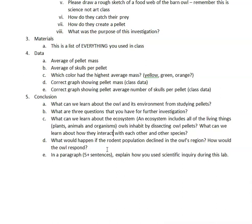What would happen if the rodent population declined in the owls' region? Most of our owl pellets had rodents, but let's say something happened to them — a disease, or a new predator came in and started eating them faster than the owls could. What would the owls do? How would the owls respond? Remember, living things respond to their environment — they adapt, some fly south for the winter when it gets cold.